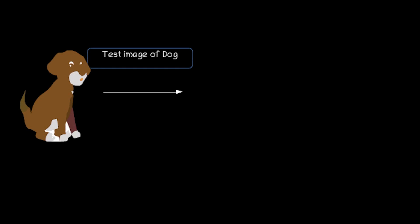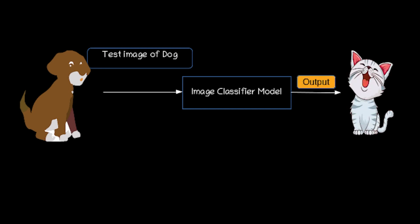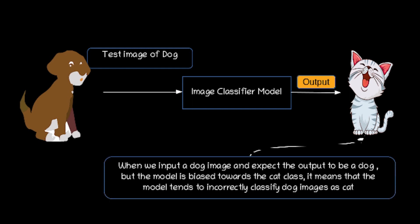However, when we test our model on a dog image, there might be some challenges due to data imbalance. Since the model has been exposed to a significantly larger number of cat images during training, it may struggle to accurately classify a dog image as a dog. As a result, there is a higher chance of incorrectly predicting the dog image as a cat. When we input a dog image and expect the output to be dog, but the model is biased towards the cat class, it means the model tends to incorrectly classify the dog image as a cat.